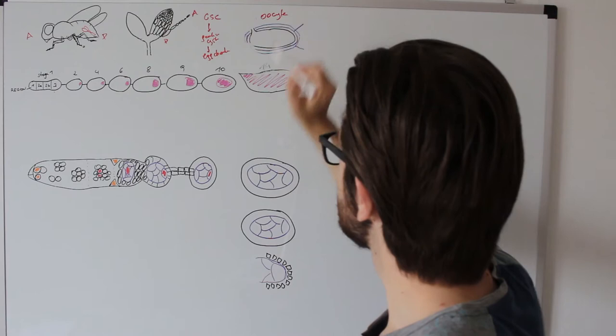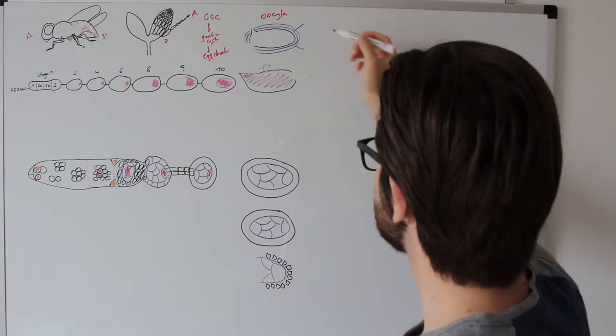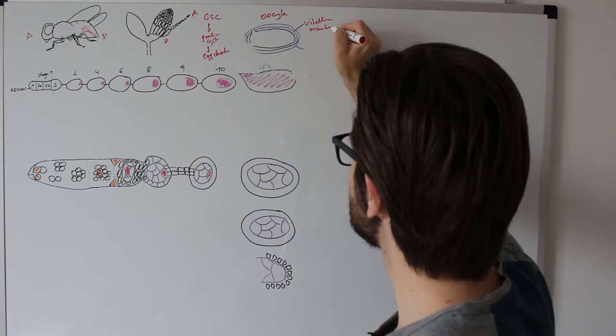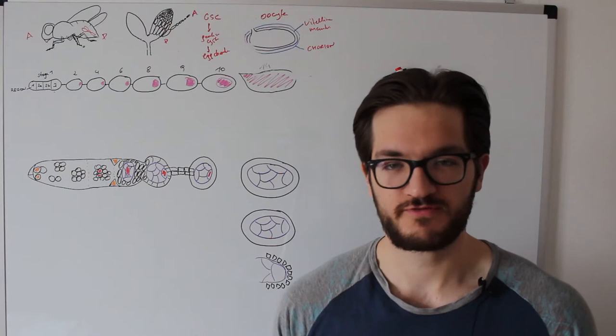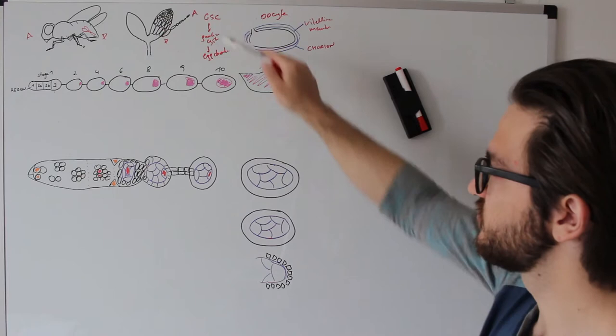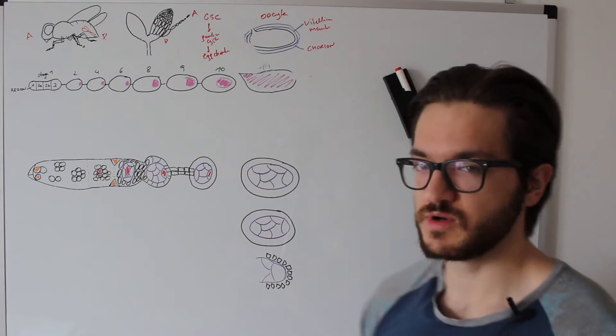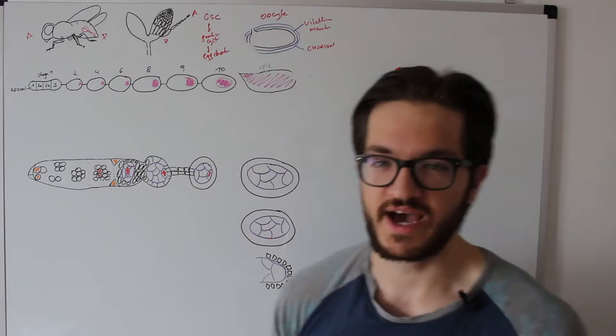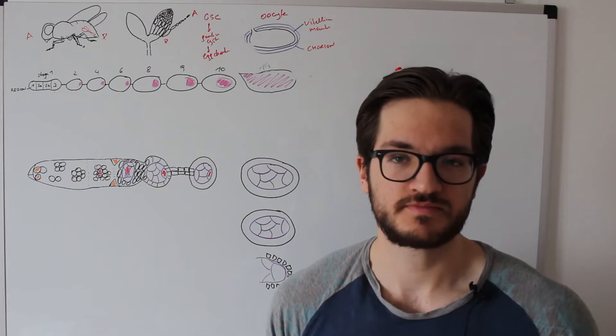The oocyte is usually a little bit cucumber-shaped and it contains two very important membranes. The inner membrane is the vitelline membrane and the outer membrane would be the chorion. The main task of the aggregate of cells that we call germline cyst and later egg chamber is to produce one big cell, the oocyte. That all happens concomitantly with the egg chamber moving from anterior to posterior. The posterior end is where the mature oocyte will hatch into the oviduct, which is called ovulation, and will then be fertilized and laid.